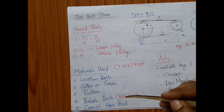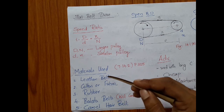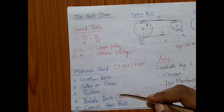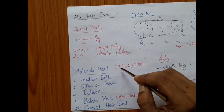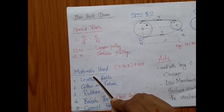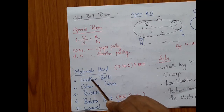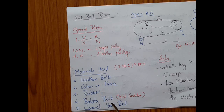Among the materials used for the fabrication of belt drives, I have listed five different types, but these are not the only materials — there are others as well, all listed in table number 14.2, page number 305. The commonly used materials are: the leather belt, cotton or fabric type belt, rubber belt, belata belt, and camel hair belt.